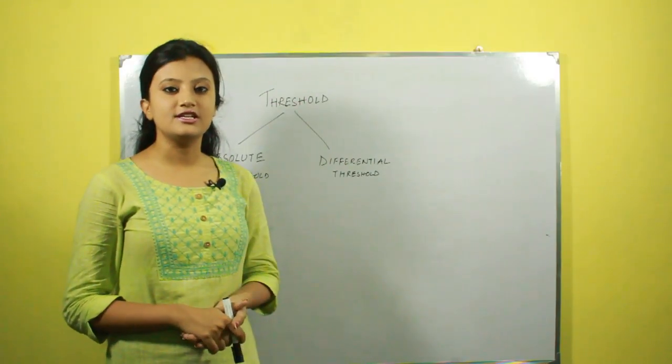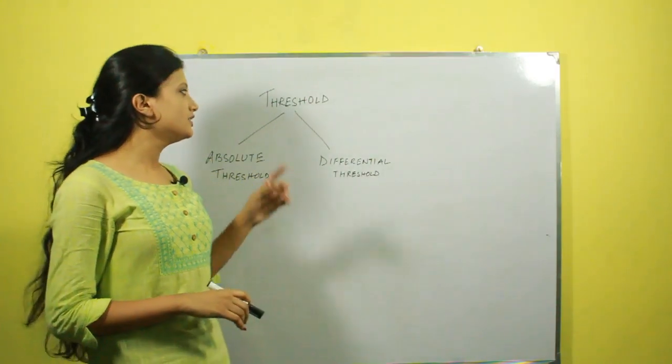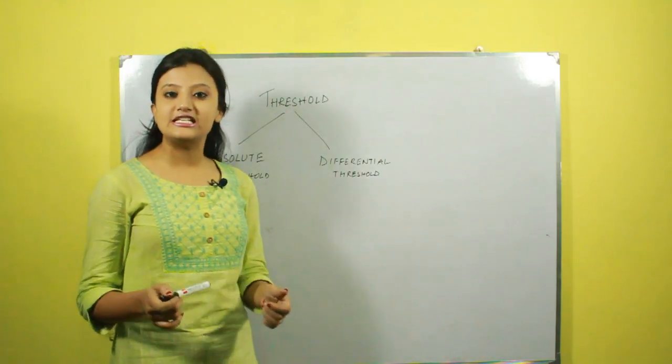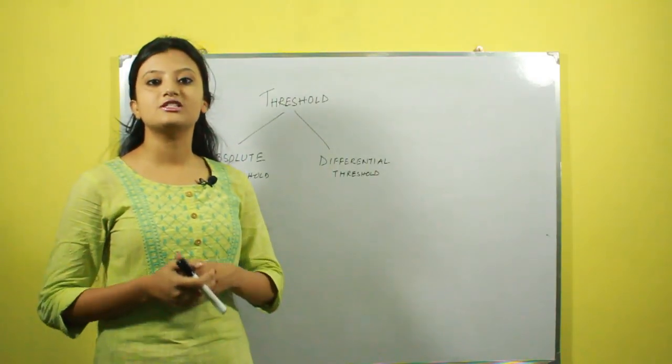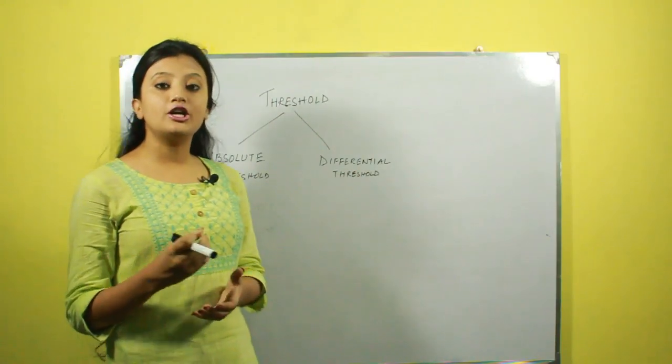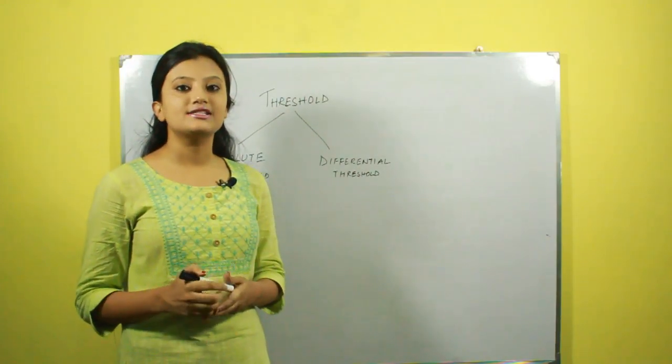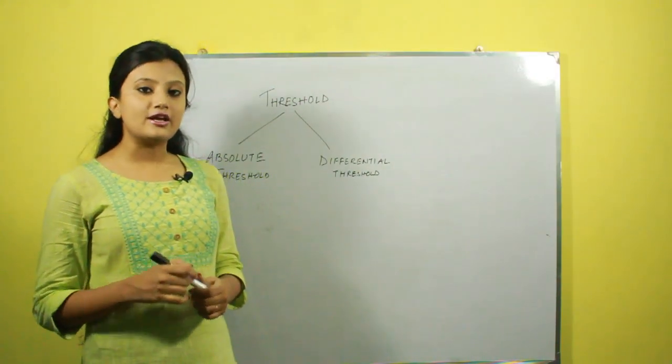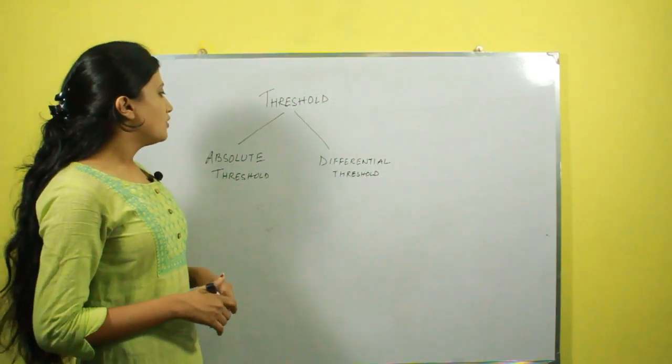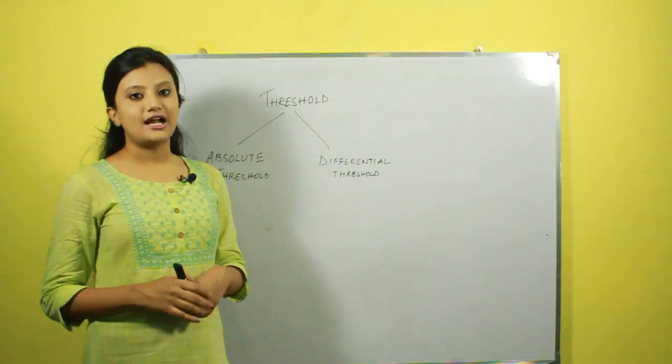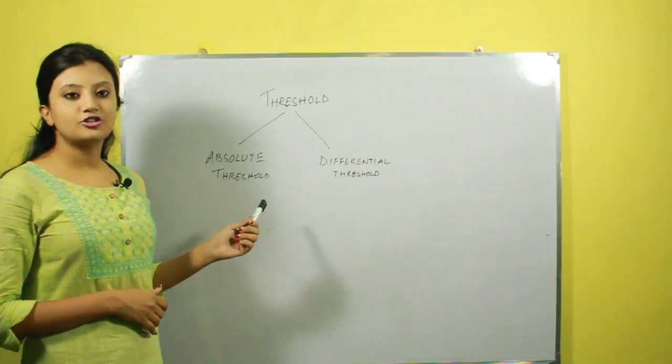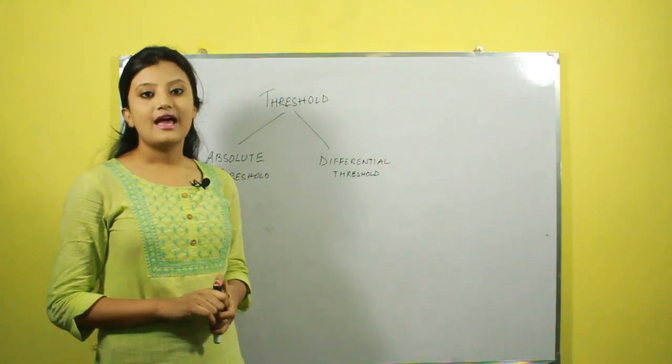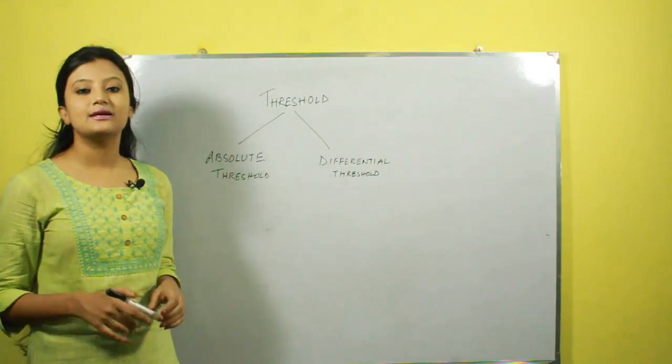Another important characteristic of sensation is their threshold. Threshold is the minimum intensity that a stimulus must have in order to produce a sensation in us at least 50% of the time. Within psychology of perception, two types of threshold are studied. One is absolute threshold and the second is differential threshold. Absolute threshold is the minimum energy below which a stimulus no longer causes a sensation.